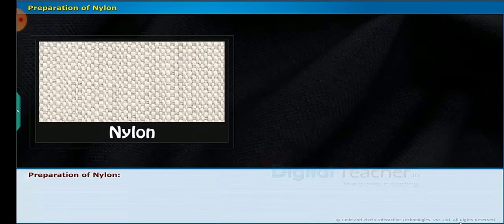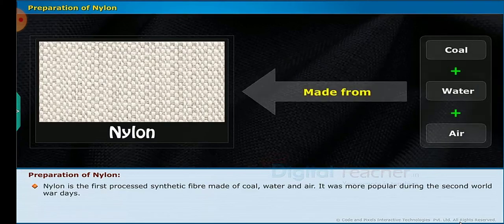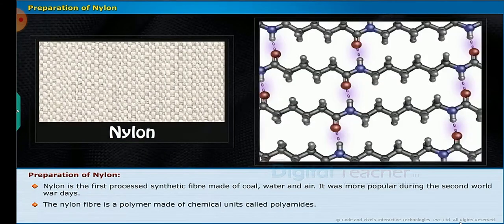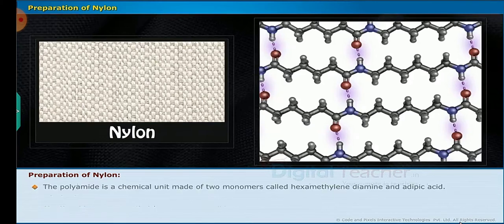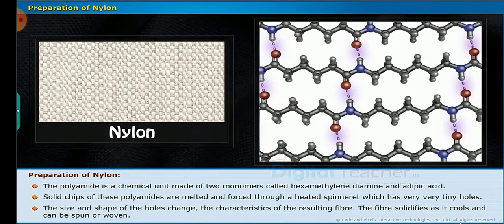Let us now discuss how nylon is prepared. Nylon is the first processed synthetic fiber made of coal, water and air, and it was more popular during the Second World War days. The nylon fiber is a polymer made of chemical units called polyamides. The polyamide is a chemical unit made of two monomers called hexamethylene diamine and adipic acid. Solid chips of these polyamides are melted and forced through a heated spinneret which has very tiny holes. The size and shape of the holes change the characteristics of the resulting fiber. The fiber solidifies as it cools and can be spun or woven.